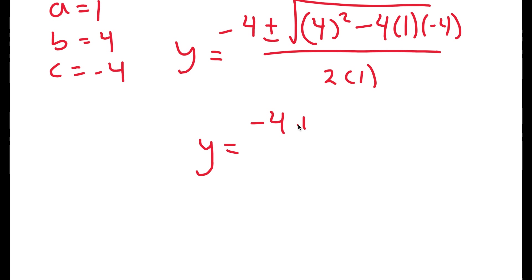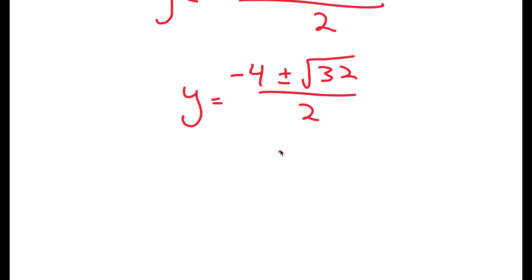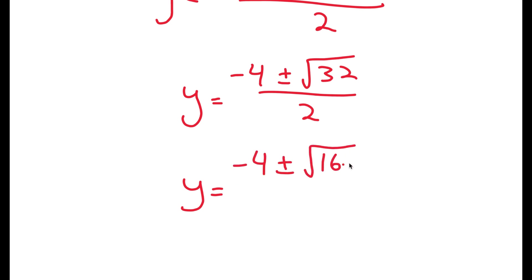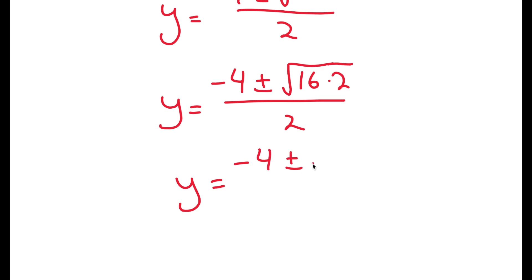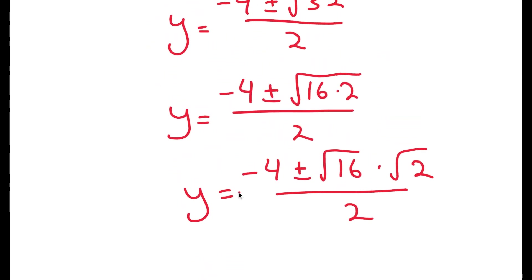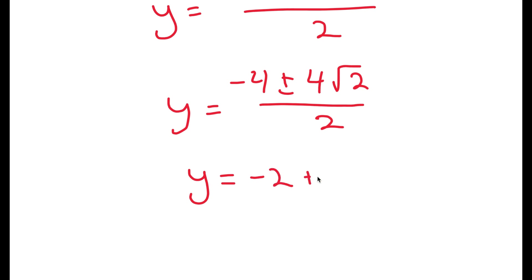This turns into negative 4 plus or minus the square root of 16 plus 16 over 2, which equals negative 4 plus or minus the square root of 32 over 2. I'm going to rewrite the square root of 32 as the square root of 16 times 2, which lets me write it as the square root of 16 times the square root of 2. The square root of 16 is 4, so I get negative 4 plus or minus 4 root 2 over 2. Dividing both terms by 2, y equals negative 2 plus or minus 2 root 2.